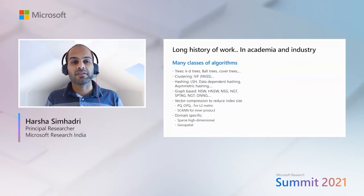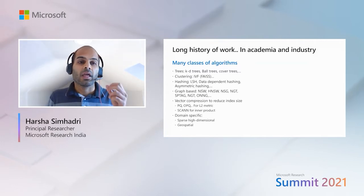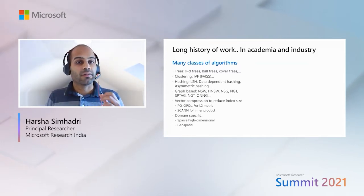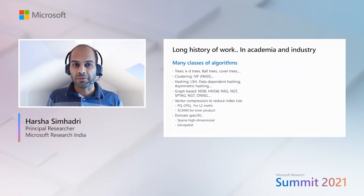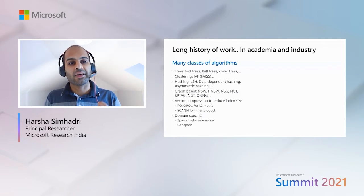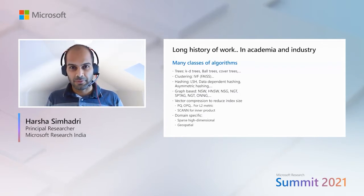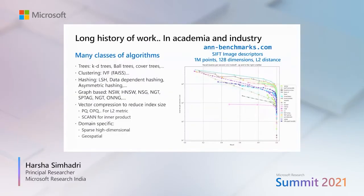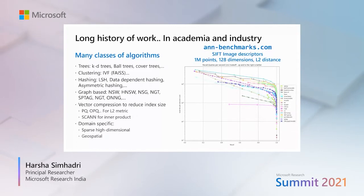Hashing-based methods are particularly appreciated because they provide a bound on the recall as a function of the time and space complexity. However, in the past few years graph-based indices have become the empirical state of the art and are now widely deployed in the industry including Microsoft. There's an active community of researchers who implement and benchmark these algorithms, and here is a comparison of more than a dozen algorithms on a million-point SIFT image descriptor dataset.